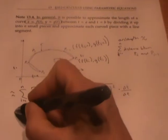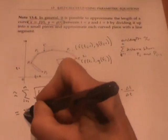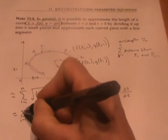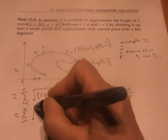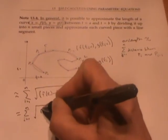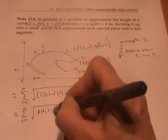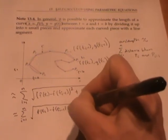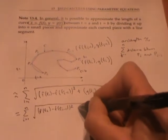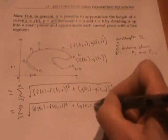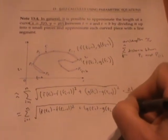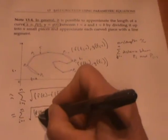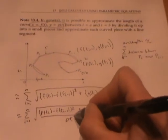I'm going to keep the top delta t here and pull the bottom delta t into the square root sign. When I pull it into the square root sign, I need to make it a square. So I have f of tI minus f of tI minus 1 squared plus g of tI minus g of tI minus 1 squared, all over delta t squared.